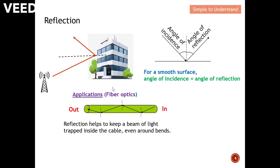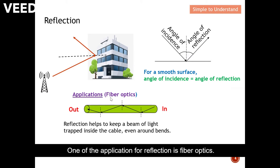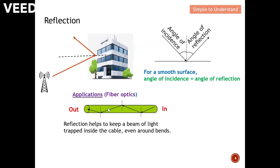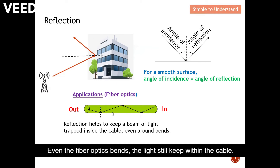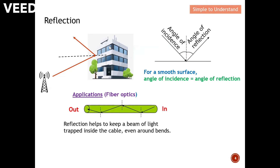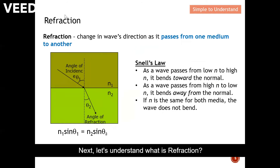One of the applications for reflection is fiber optics. You can see from here the light in a fiber optic is reflected, and reflection actually helps to keep the beam of light on track inside the cable. Even when the fiber optic bends, the light still stays within the cable. This is reflection.